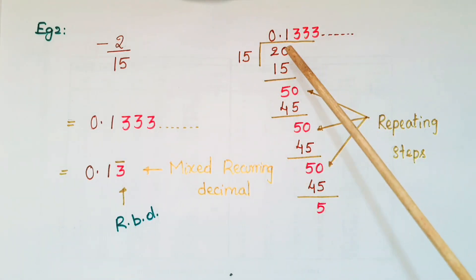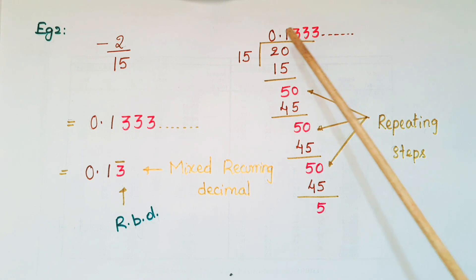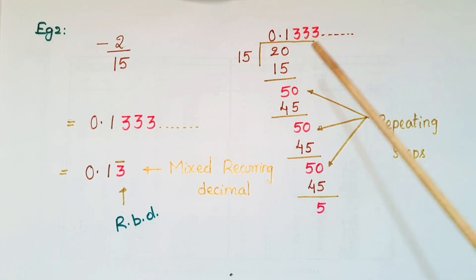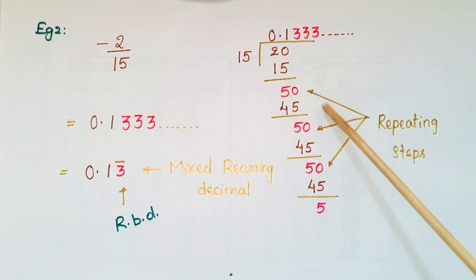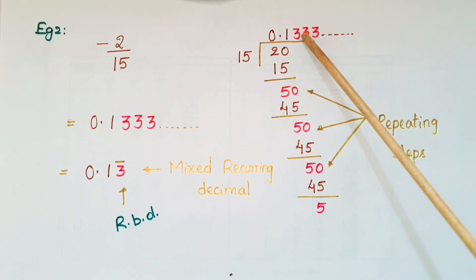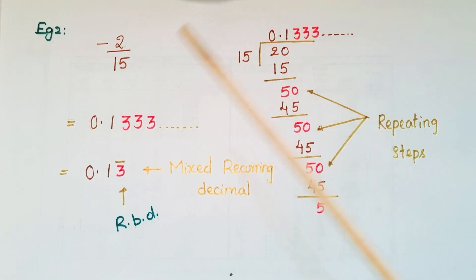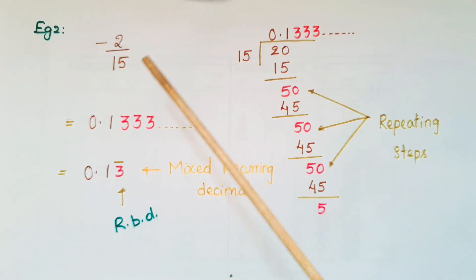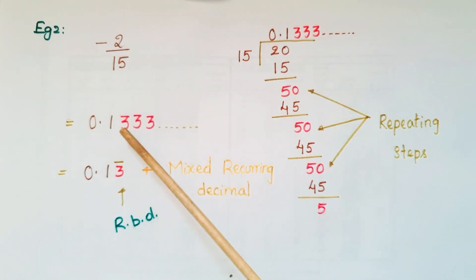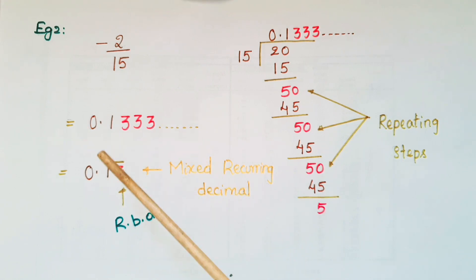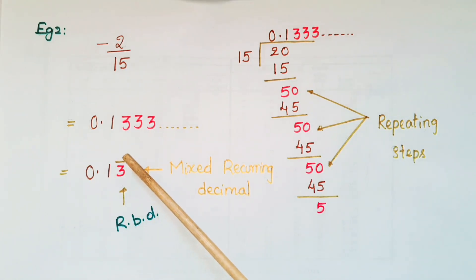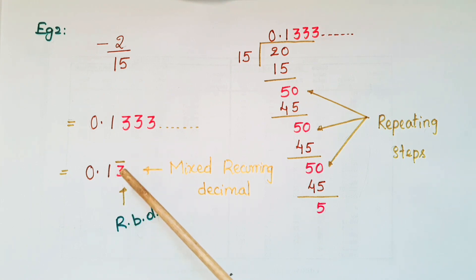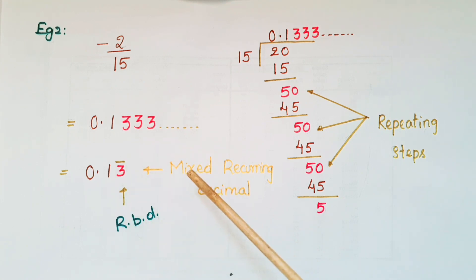Another example: convert the rational number minus 2 by 15 into a decimal number. Divide 2 by 15 and you get a quotient of 0.1333, and so on. Here 3 is repeating at the quotient place, so we write minus 2 by 15 as 0.13 bar. The repeating block of digits is equal to 1. This type of decimal is called a mixed recurring decimal.